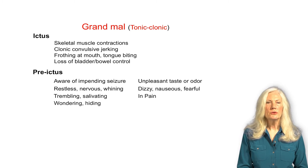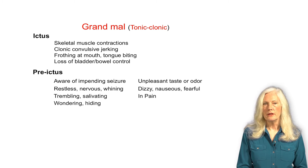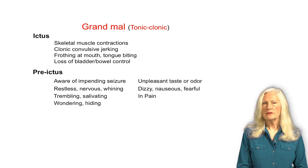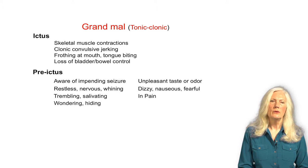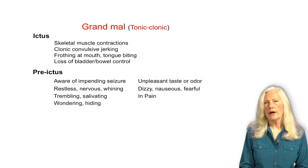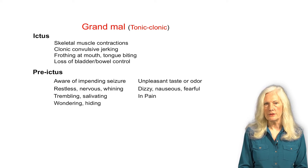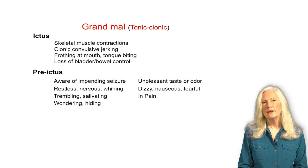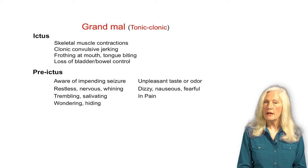Before the motor activity, there's usually a period called the pre-ictal phase, when the animal is aware that something is going to happen. The animal might be restless, nervous, whining, trembling, salivating excessively, needing more attention than usual, wandering aimlessly, or even hiding. In humans, people describe sensory abnormalities of taste or odor, dizziness, nausea, fear, and pain in the gut, head, or thorax. Based on their behavior, we have to assume that animals have the same sensory distortions during the pre-ictal phase.